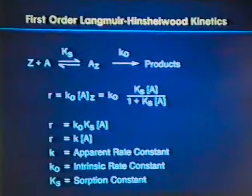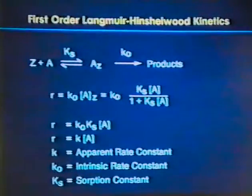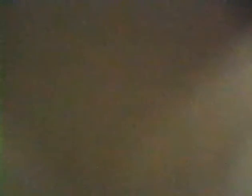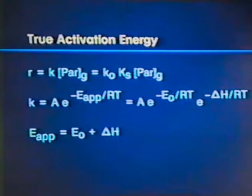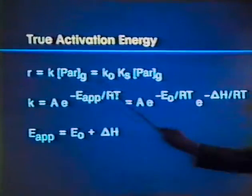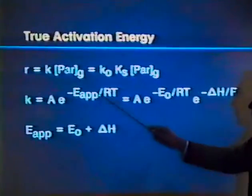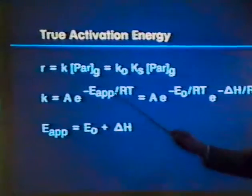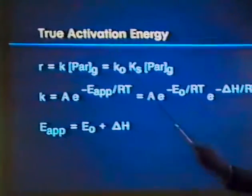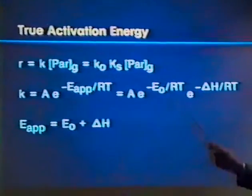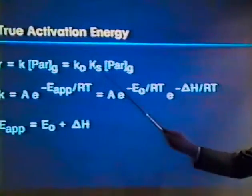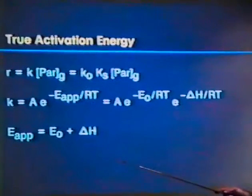This one goes up with temperature, the rate constant, this one goes down with temperature, the heat of sorption is negative, and so we have to split these, and that leads to the apparent activation energy in terms of the temperature dependency of the sorption and the temperature dependency of the intrinsic rate constant, and they go in the opposite direction.